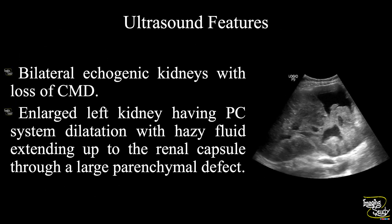In summary: bilateral echogenic kidneys with loss of corticomedullary differentiation is noted. The left kidney is grossly enlarged, having pelvicalyceal system dilatation with hazy fluid extending up to the renal capsule through a large parenchymal defect, indicating urinoma. Overall, this is a case of bilateral pyelonephritis with formation of urinoma on the left side.